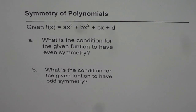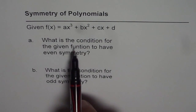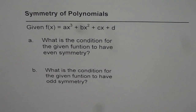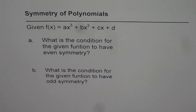Symmetry of polynomials: given f(x) = ax³ + bx² + cx + d, we have two questions. Part one: what is the condition for the given function to have even symmetry? Part two: what is the condition for the given function to have odd symmetry? In this set of videos we will be exploring more about symmetry.